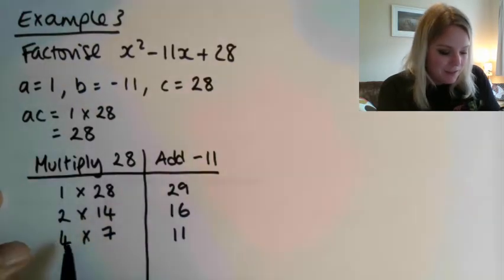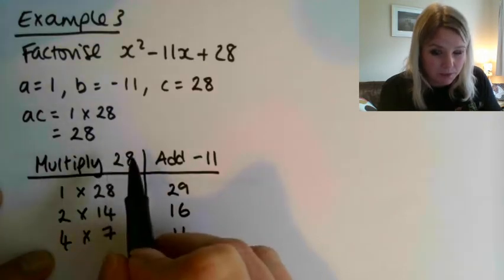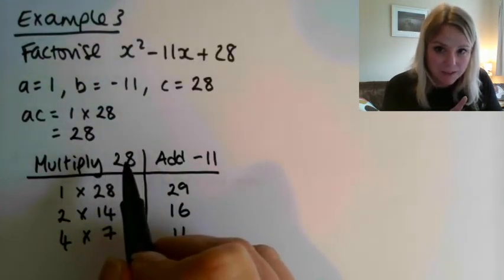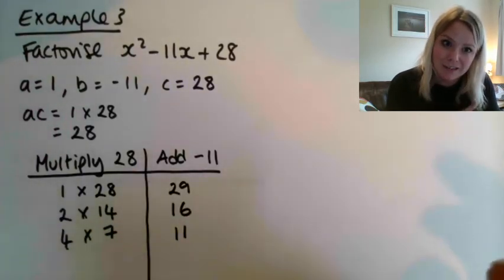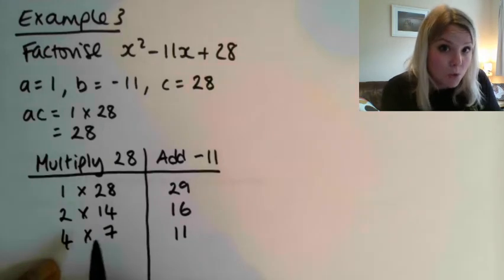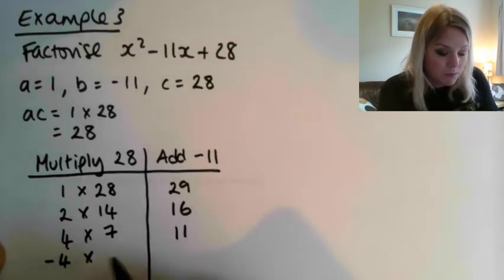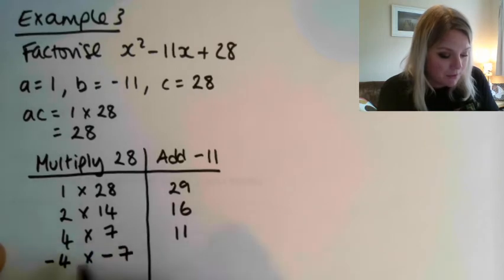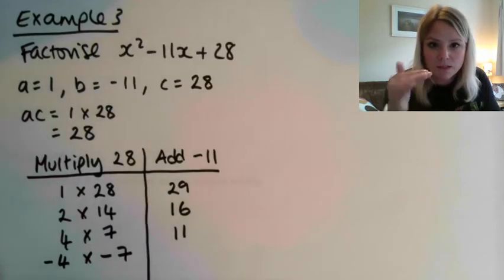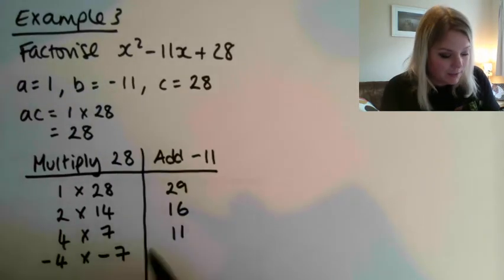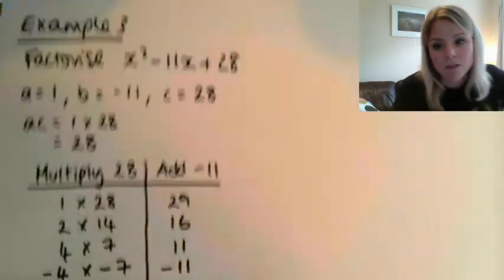4 multiplied by 7, if I add those together, I get 11. Ooh, now, 2 positives multiply together to give a positive, but 2 negatives also multiply together to give a positive, and the 2 negatives will add together to give us that minus 11. So if instead of 4 multiplied by 7, I had done minus 4 multiplied by minus 7, that still multiplies to give me 28, but if I add minus 4 to minus 7, I get minus 11. So these are the numbers that we're going to be using this time.